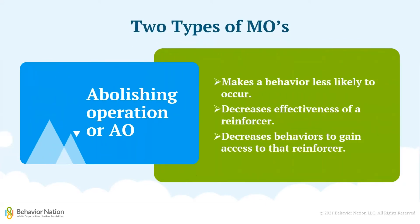The next type is an abolishing operation. This means that a behavior would be less likely to happen. The reinforcer will be less effective and the behaviors that have been associated to gain access to that reinforcer will decrease. An example of this is if your child has just engaged in playing with their favorite toy or activity for an extended period of time — it is less likely that they will engage in behaviors to gain more access or request additional time.